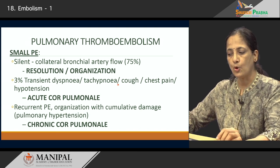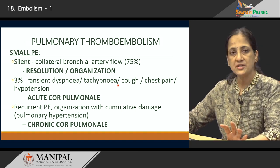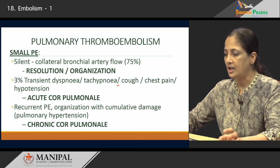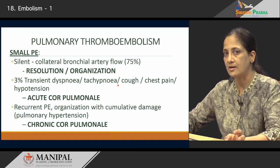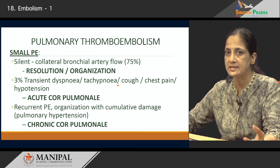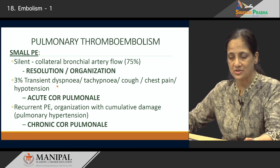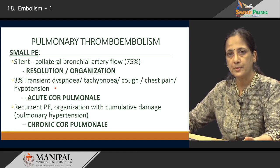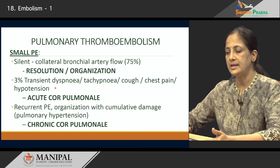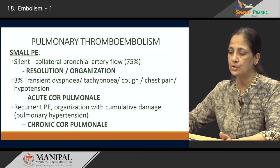However, in a small percentage where multiple small emboli have entered smaller vessels, patients present with transient dyspnea, tachypnea, cough, and chest pain. If about 60% of the vasculature is affected, compensatory vasospasm results because of vasoactive substances released by platelets in these thrombi, causing vasoconstriction. This results in hypotension because cardiac output is decreased, causing right heart failure — known as acute cor pulmonale.